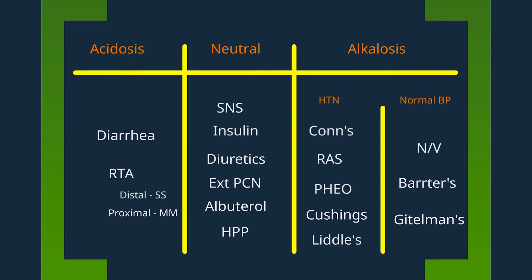Under our neutral causes, there are medications and other states that cause intracellular shift of potassium. This includes the sympathetic nervous system — when there's increased tone, potassium tends to shift intracellularly. Other medication causes include insulin, diuretics, extended penicillins such as piperacillin-tazobactam or other penicillin derivatives, and albuterol, which lead to intracellular shift or urinary excretion of potassium. The final cause in this grouping is hypokalemic periodic paralysis, associated with paralysis and hypokalemia, seen commonly after a large carbohydrate meal or exercise, stimulating insulin and the sympathetic nervous system.